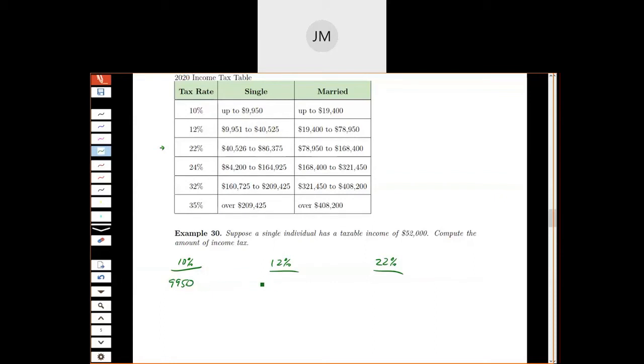So if it can hold up to $40,525, but the first $9,950 is already accounted for in this 10% bucket, then I can subtract those. So I'm going to take $40,525 minus $9,950, and that gives me how much money I can hold in this 12% bucket.